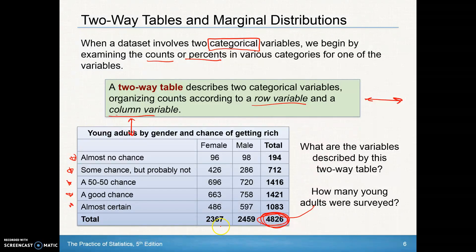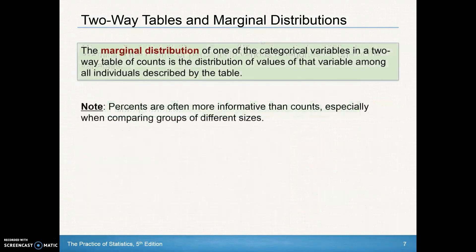The grand total is the total number of females plus males. If we add up all of the individual totals for each of the different variables, it should add up to that same amount. The marginal distribution of one of the categorical variables in a two-way table of counts is the distribution of values of that variable among all individuals described by the table.